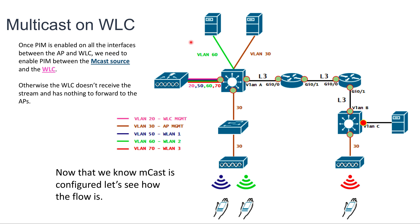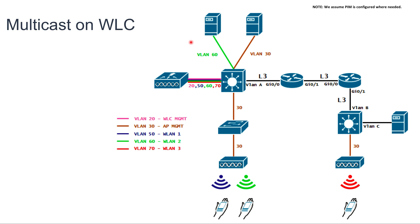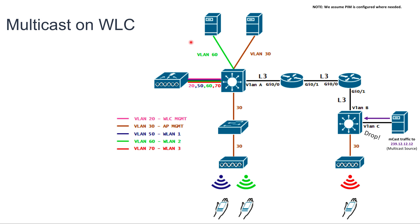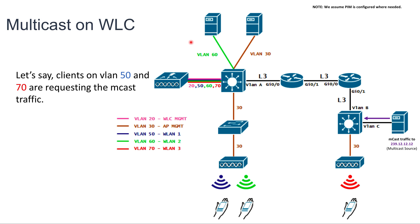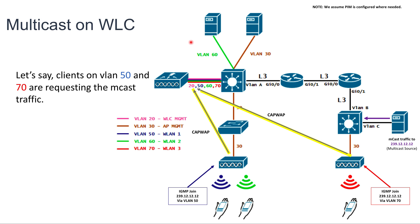Now that we know the Multicast is configured, let's see how the whole flow of the Multicast traffic works. As no one is requesting the traffic the server is sending — the server is sending traffic to 239.12.12.12 — the switch is dropping the traffic. When the clients on VLAN 50 and 70 request the Multicast traffic, they will send an IGMP join to the Multicast group. The access points will receive that IGMP join packet, or membership report, and will encapsulate it in CAPWAP, and it will be sent via Unicast from the access points to the controller.